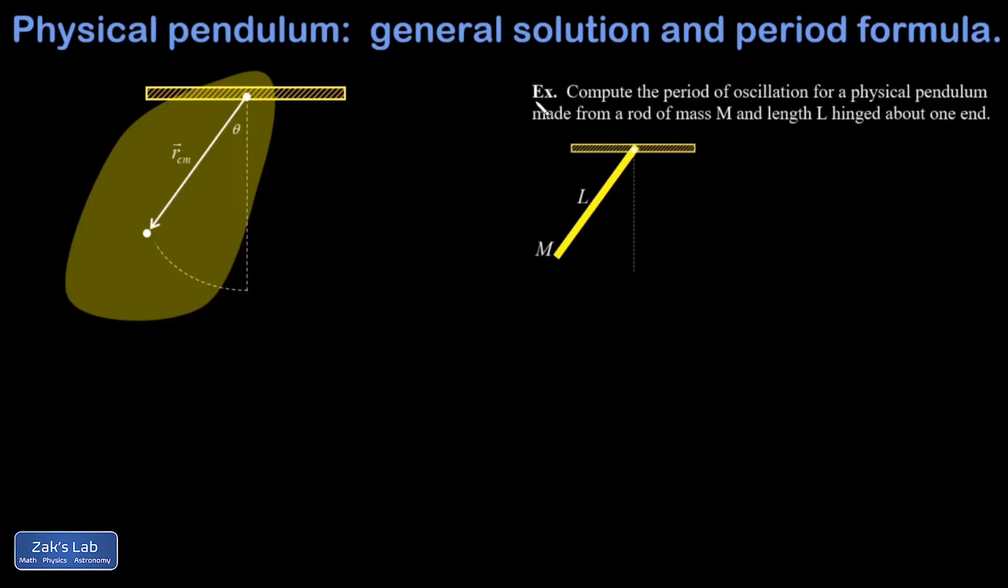Once we solve the physical pendulum, we'll apply our results to a simple example where we're trying to find the period of oscillation for a rod that's hinged about the end. So I've marked in my diagram the center of mass of this rigid body.